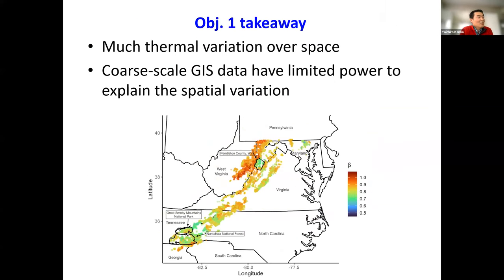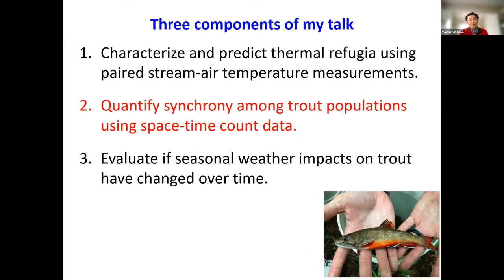The takeaway from objective one is that there was much thermal variation over space, and coarse-scale GIS data have limited power to explain that spatial variation, which was not too surprising. Now let's move on to the second part and talk more about the trout itself — population synchrony.